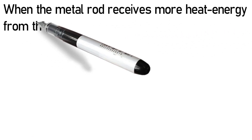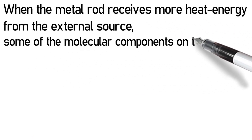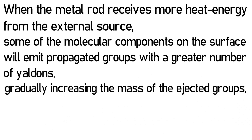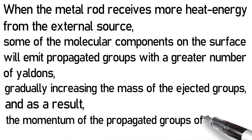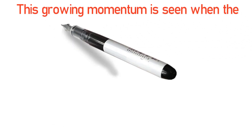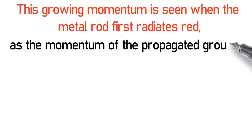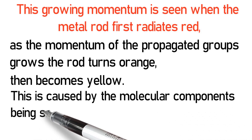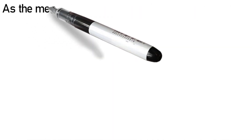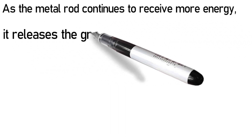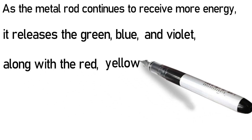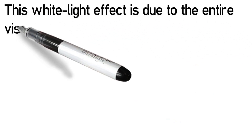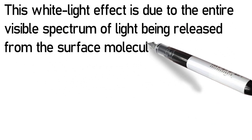When the metal rod receives more heat energy from the external source, some of the molecular components on the surface will emit propagated groups with a greater number of Yaldins, gradually increasing the mass of the ejected groups and, as a result, the momentum of the propagated groups of Yaldins. As the momentum of the propagated groups grows, the rod turns orange, then becomes yellow, then releases green, blue, and violet along with the red, yellow, and orange, making the rod appear to emit white light to the naked eye. This white light effect is due to the entire visible spectrum of light being released from the surface molecules of the heated metal rod.